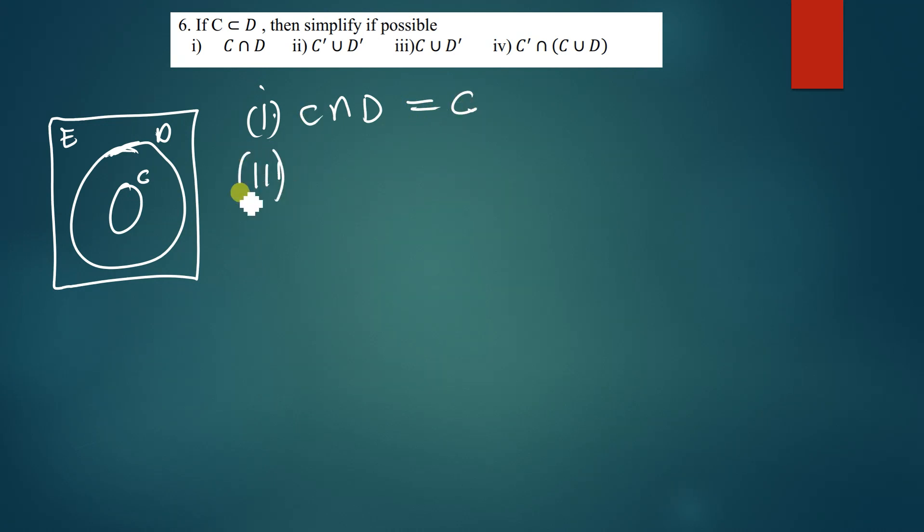Part two says we simplify c complement union d complement. By using De Morgan's theorem we can simplify this as c intersection d complement. So c intersection d we found it to be c, so this is just the same as c complement.